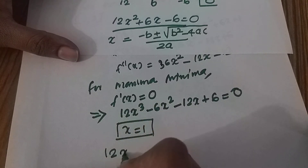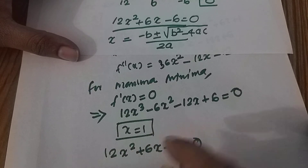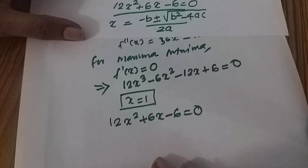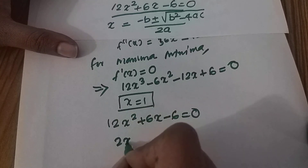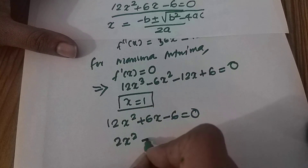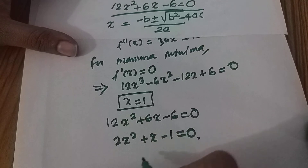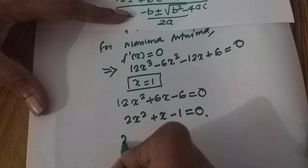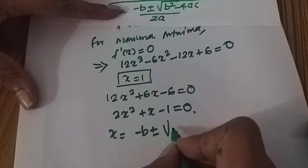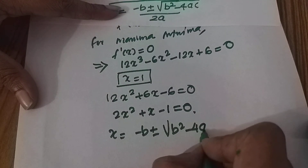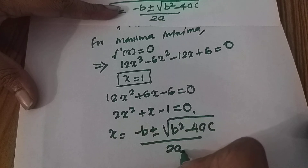Setting 2x² + 6x − 1 = 0. We put this together using the quadratic formula: x = (−b ± √(b² − 4ac)) / 2a.